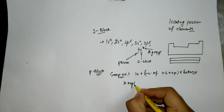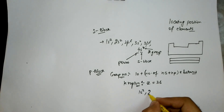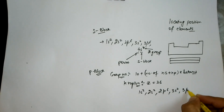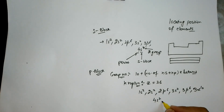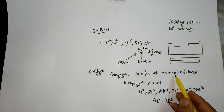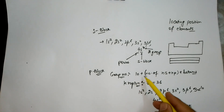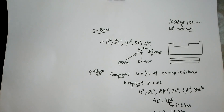For example, we have krypton with atomic number 36. Writing its electronic configuration, we find the last electron is filled in the p subshell, so the element belongs to the p-block. Adding the valence s and p subshell electrons: 6 plus 2 equals 8, and adding 10 gives us 10 plus 8 equals 18. So krypton belongs to group 18.